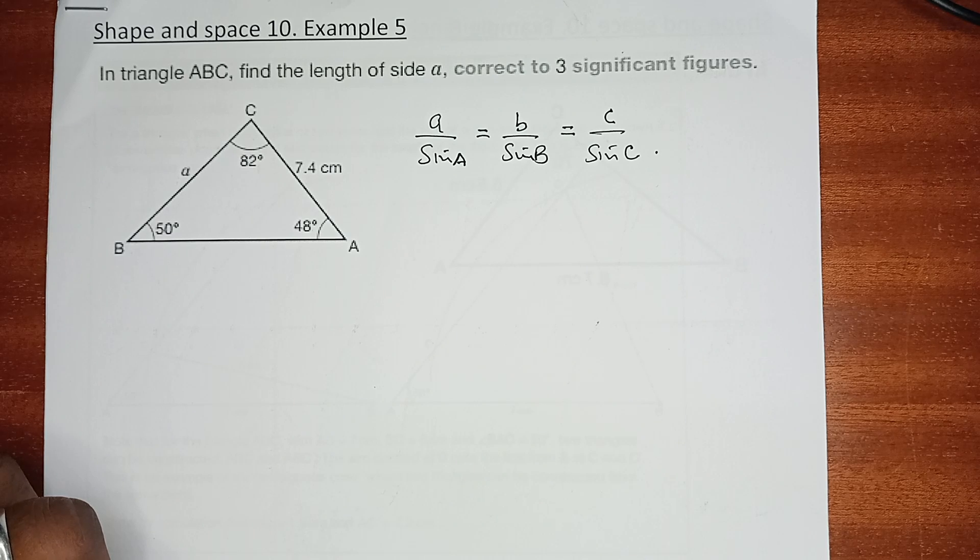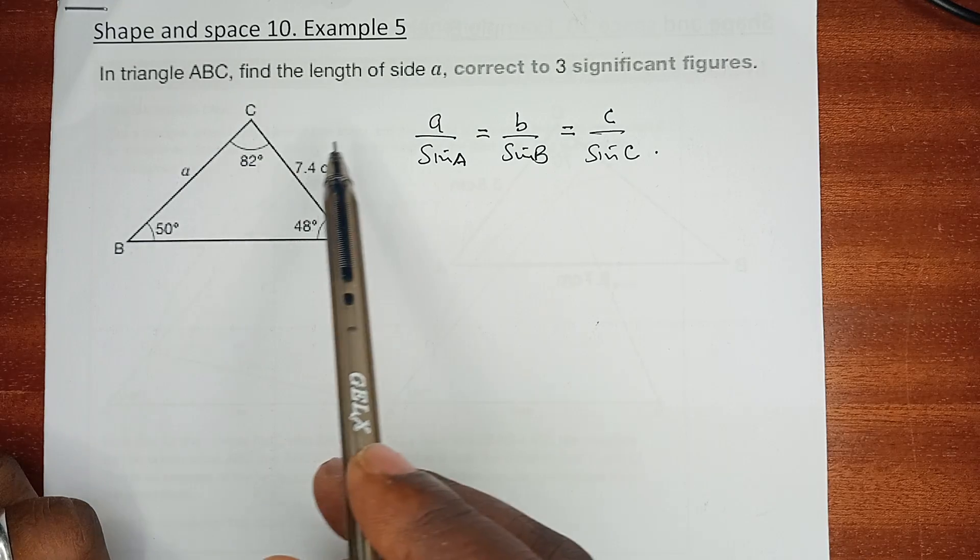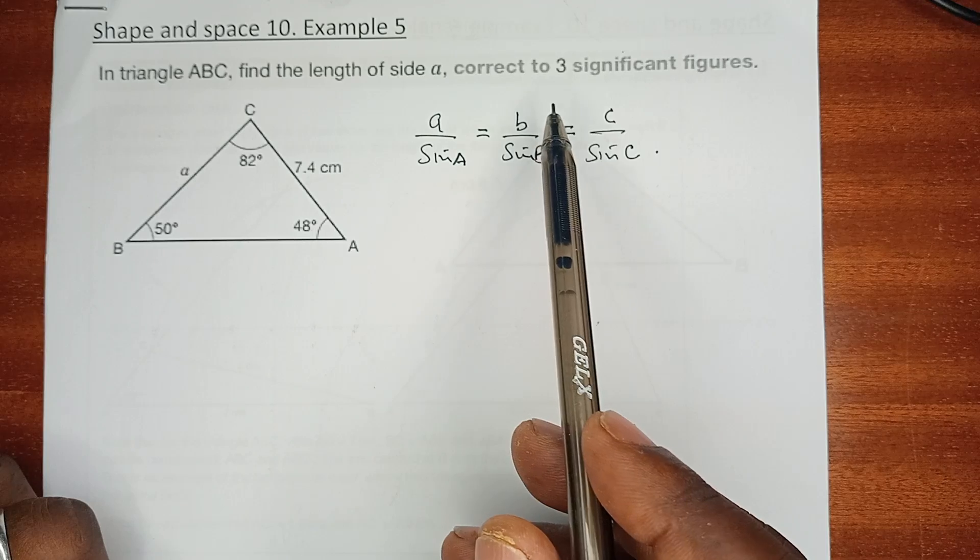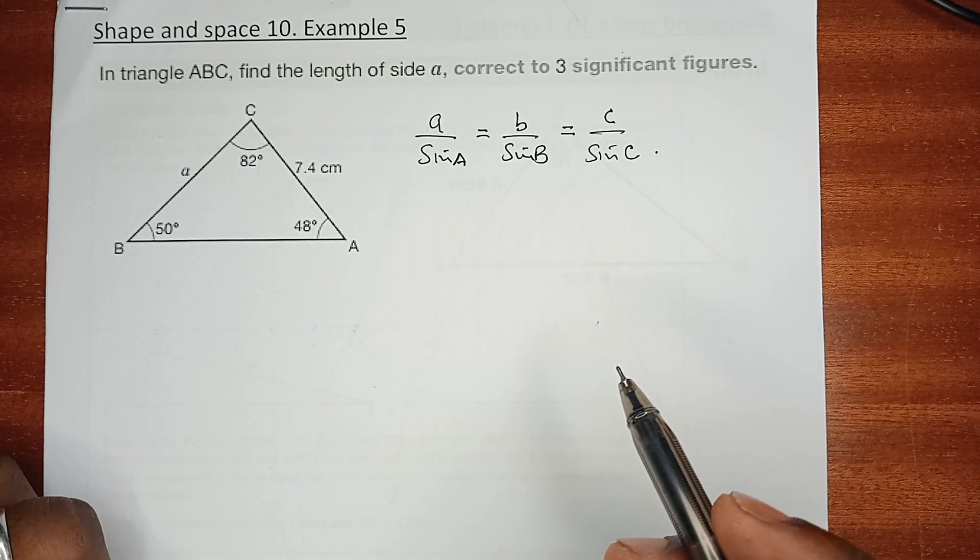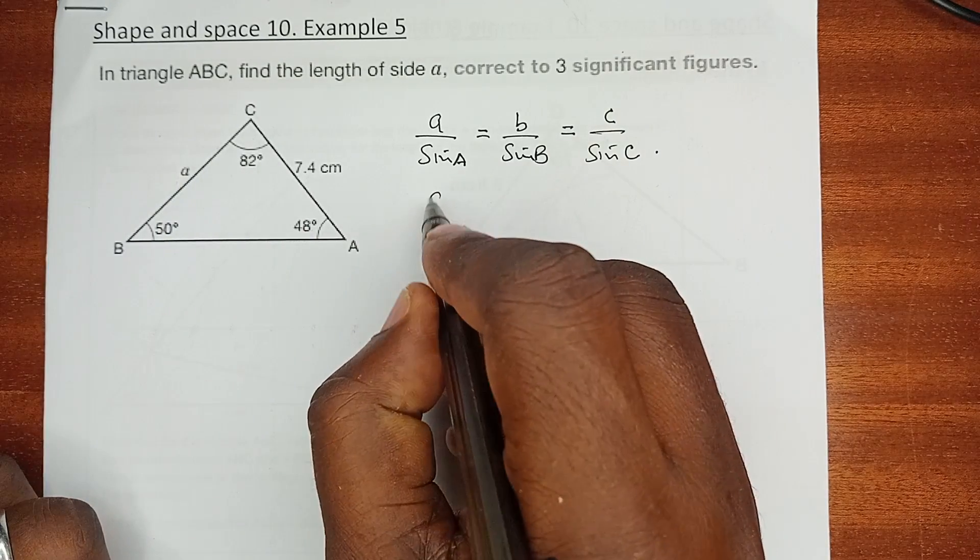In triangle ABC, find the length of side a correct to three significant figures. As you can see, we have a here.